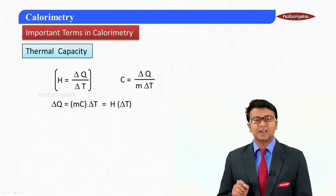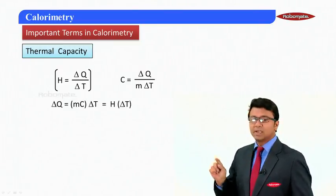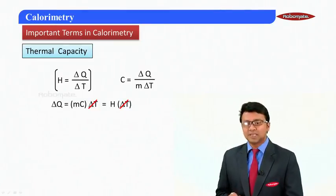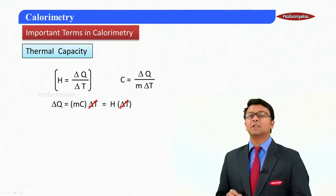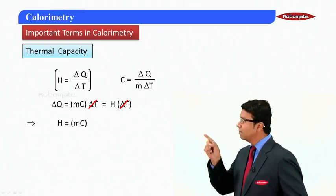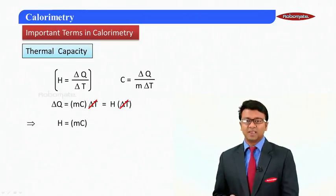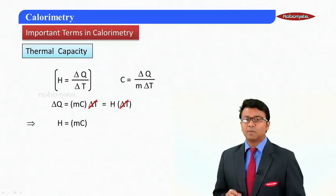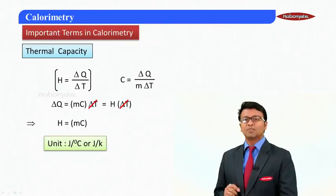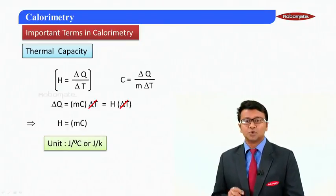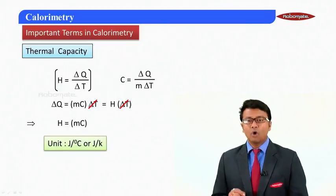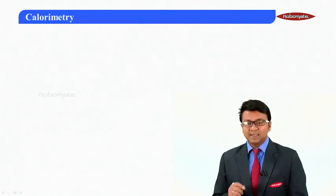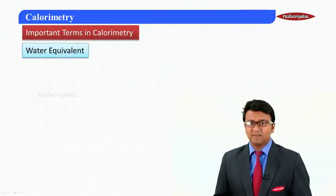From the relation delta Q = mc·delta T, this can also be written as H·delta T. Cancelling delta T from both sides, we get thermal capacity equals mass times specific heat capacity. This is a very important relation to remember. The unit of thermal capacity is joules per degree centigrade or joules per Kelvin.